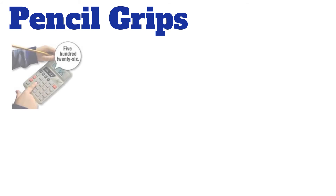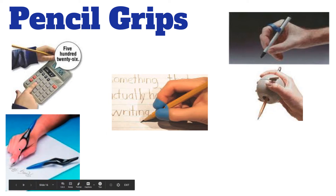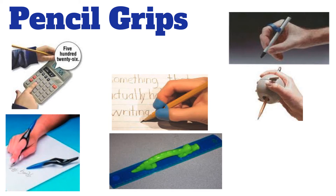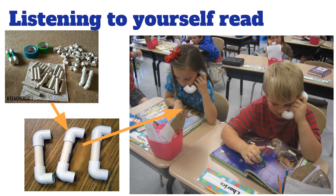Pencil grips — you never think about pencil grips, but what if a student isn't able to physically grip a pencil very well? I used to have at least seven or eight different types in my elementary classroom. Something as simple as pencil grips, a grip for a ruler, or grips for scissors — especially for someone with only one hand — are all assistive technology.